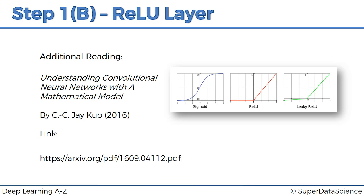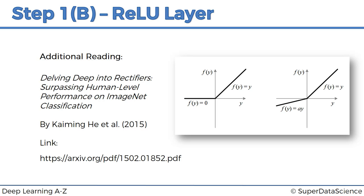If you really want to dig in and explore, there's another paper called 'Delving Deep into Rectifiers: Surpassing Human-Level Performance on ImageNet Classification.' The authors, Kaiming He and others from Microsoft Research, propose a different type of rectified linear unit function — the parametric rectified linear unit — and argue it delivers better results without sacrificing performance. The ReLU layer is pretty simple, just applying the rectifier function. I look forward to seeing you next time. Until then, enjoy deep learning.